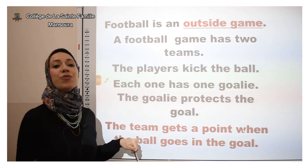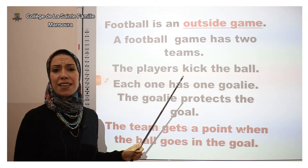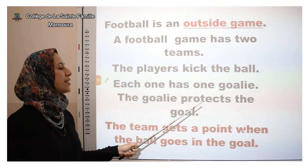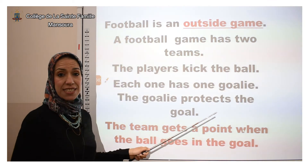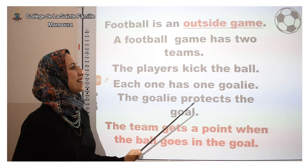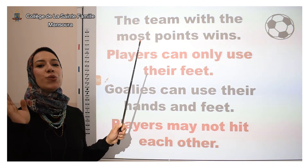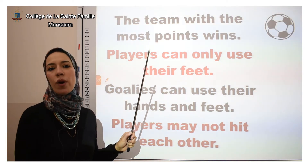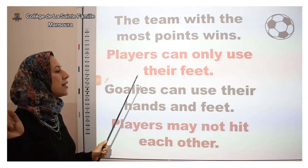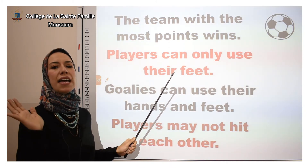The players kick the ball — they use their legs to kick it. Each team has one goalie. The goalie is the person who prevents the ball from going into the goal and protects it. The team gets a point when the ball goes in the goal. The team with the most points wins. Players can only use their feet — it's not allowed to use your hands in football. Goalies, however, can use both their hands and feet.